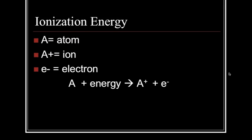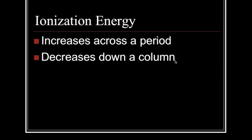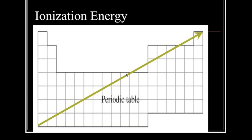Looking at ionization energy with those ions, we have an atom where energy is added to it. If we add enough energy, that atom will give up an electron, and the amount of energy it takes to do that is the ionization energy. It has a trend as well: as we move up the groups, we have a higher ionization energy, and as we move from left to right across the periods, ionization energy increases. So it increases across the periods and decreases down the columns — it increases to the right and up the group.